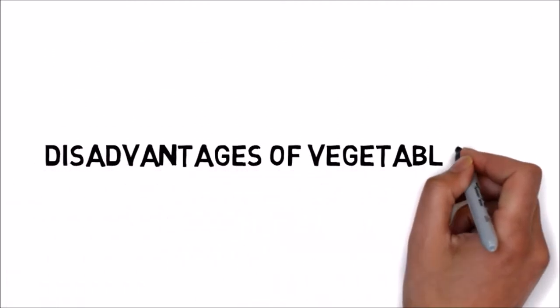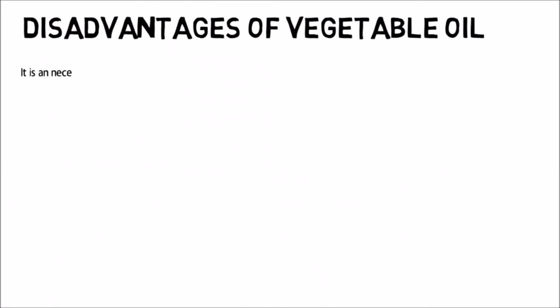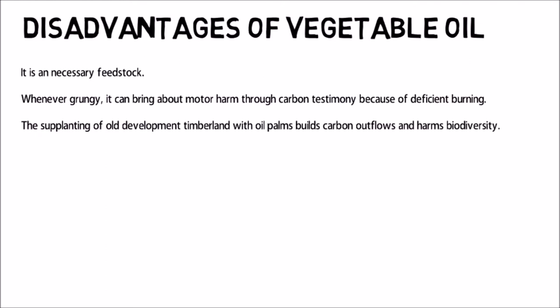The disadvantages of vegetable oil: It is unnecessary feedstock. Whenever grungy, it can bring about motor harm through carbon testimony because of deficient burning. The supplanting of old development timberland with oil palms builds carbon outflows and harms biodiversity.